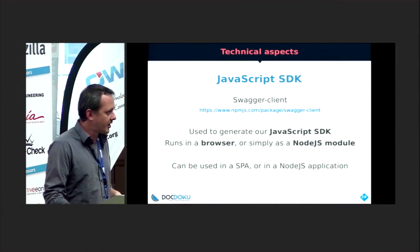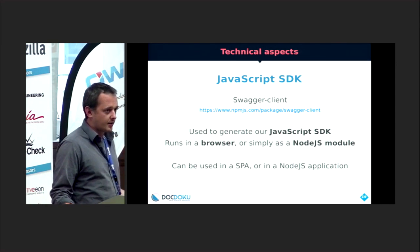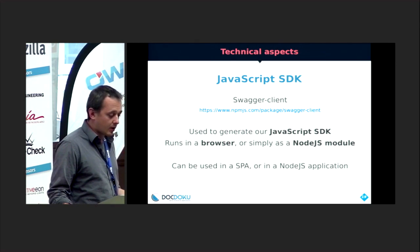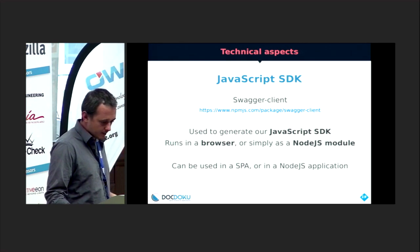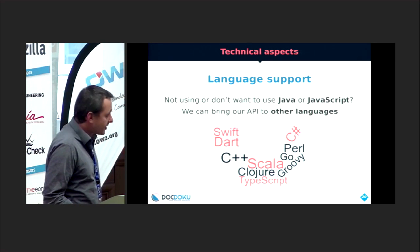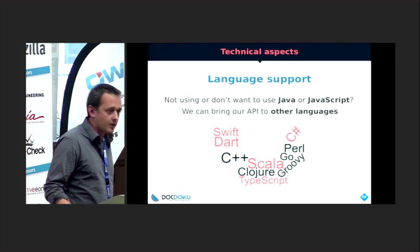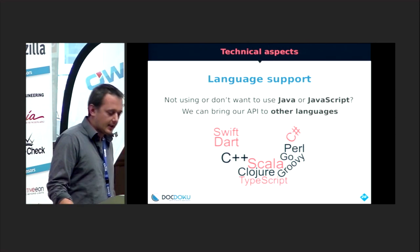The JavaScript SDK also uses a module from Swagger called Swagger Client — it's simply a Node.js module which reads the JSON description and generates a JavaScript SDK. It can run in a browser, so you can directly integrate it into an existing web app, and you can also use it simply as a Node.js module in a server application. If you don't like Java or JavaScript, there are many other languages we can support, like Swift, Dart, Scala, and so on.